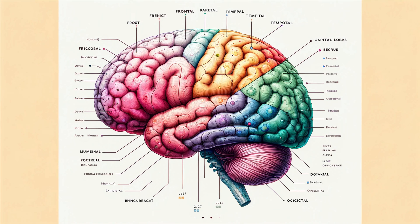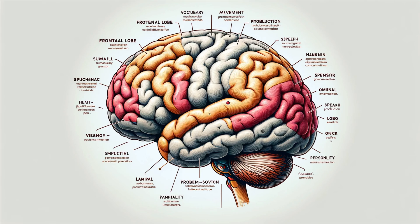The cerebrum is further divided into four lobes, each responsible for different functions. The frontal lobe, located at the front, is your command center for voluntary movement, speech production, problem solving, and planning. It's also where your personality resides.